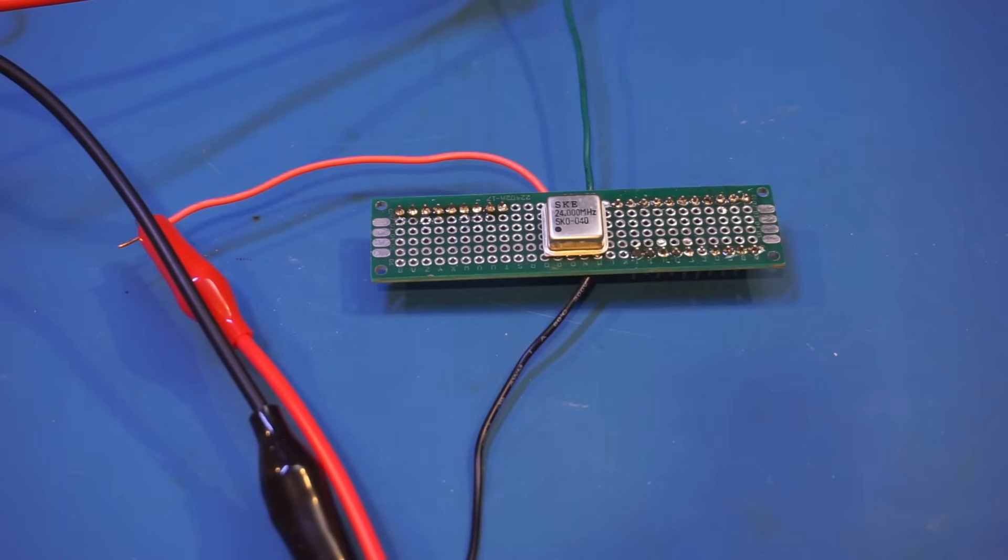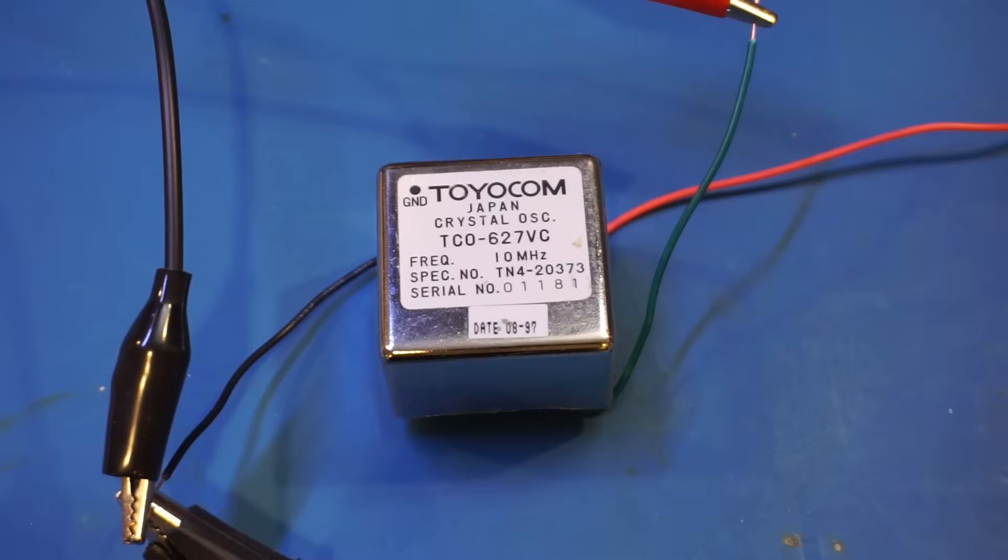In most cases, an oven-controlled crystal oscillator, or OCXO, is used in high-precision equipment. Both the 5350B and the Rekodena frequency counter have OCXOs inside. Here I have a 10 MHz oven-controlled crystal oscillator that has been powered on for about an hour now, so the output frequency should have been stabilized.